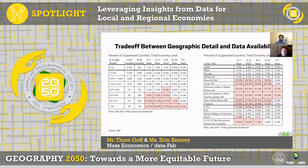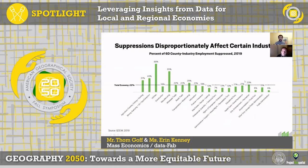If you care about developing an understanding of African American employment in a county or region, you're going to run into a lot of suppressions in the raw data — up to about a quarter of your county is not going to have data for that demographic. Suppressions also have a disproportionate impact on certain industries. The utility sector is by far the most suppressed, with 89% of its total employment suppressed. Manufacturing is the second most suppressed sector at about 10% of the total economy, with nearly two-thirds of its employment suppressed.